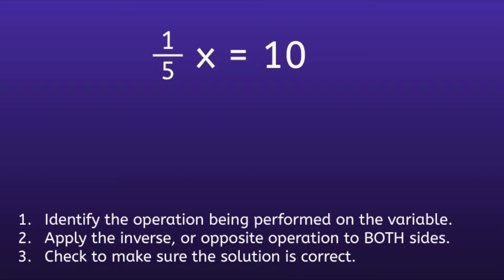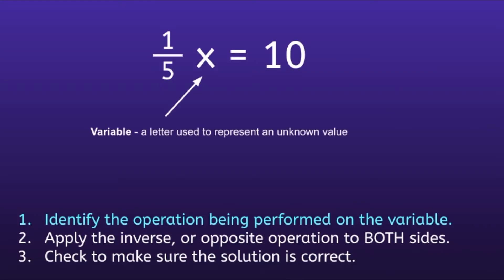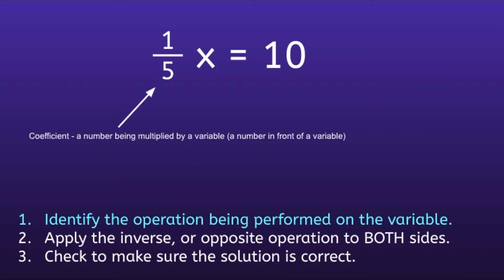One-fifth x is equal to 10. Step 1: identify the operation being performed on the variable. Looking at this equation, x is the variable — a letter used to represent an unknown value. In front of the variable, we have one-fifth, which is called a coefficient. A coefficient is a number being multiplied by a variable.